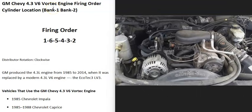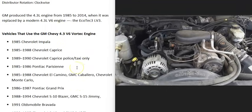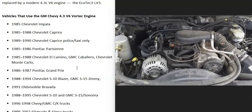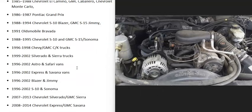Hello all. If you have a GM or Chevy 4.3 liter V6 Vortec engine, I thought I'd quickly go over what the firing order is, the cylinder location, and which side of the engine is bank one and bank two. GM produced the 4.3 liter engine from 1985 to 2014 until it was replaced by the Ecotec 3, and it came in many different cars and trucks.